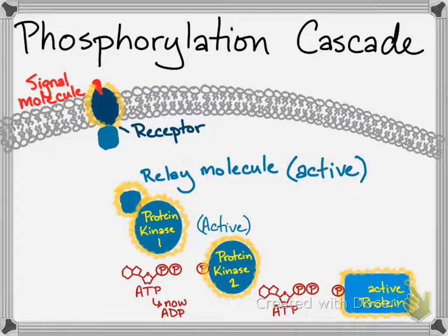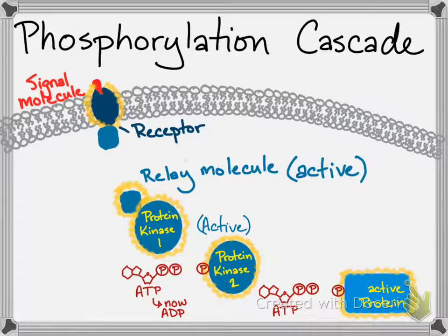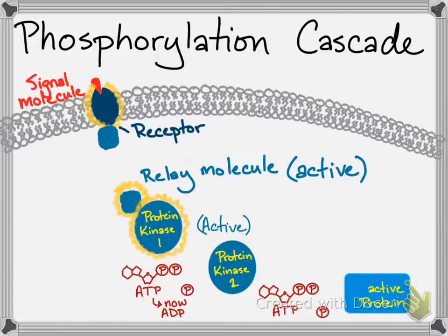Each activated molecule can be deactivated by a phosphatase that will remove the phosphate, so that the signal doesn't stay in the on position forever. No original signal means no relay molecule is activated, and eventually all active proteins are switched off by removing their phosphates.